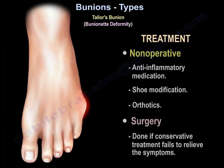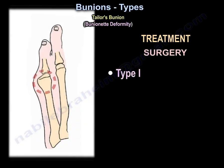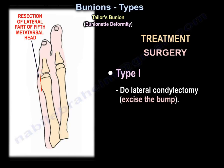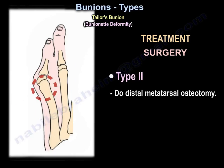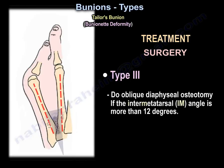Treatment is non-operative first, such as non-steroidal anti-inflammatory drugs, shoe wear modification, and orthotics. Surgery is done if conservative treatment fails to relieve the symptoms. In type one deformity, it is treated by lateral condylectomy, meaning excising the bump. In type two, a distal metatarsal osteotomy is performed. In type three, an oblique diaphyseal osteotomy is done if the intermetatarsal angle is more than 12 degrees.